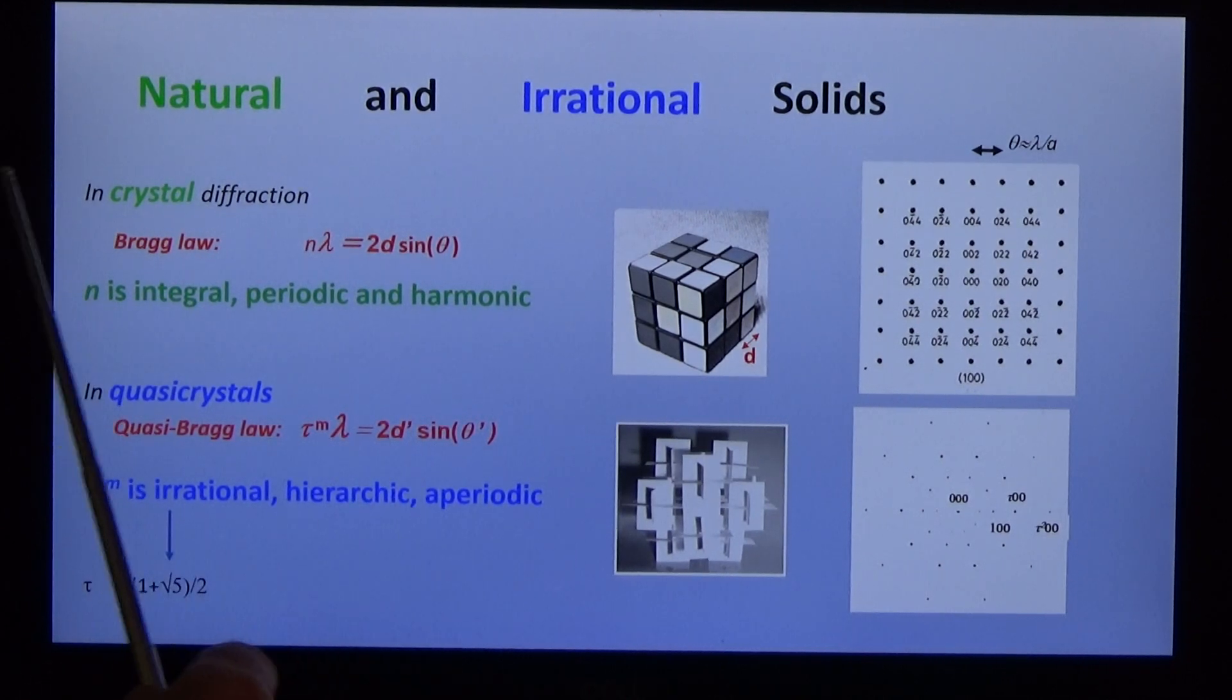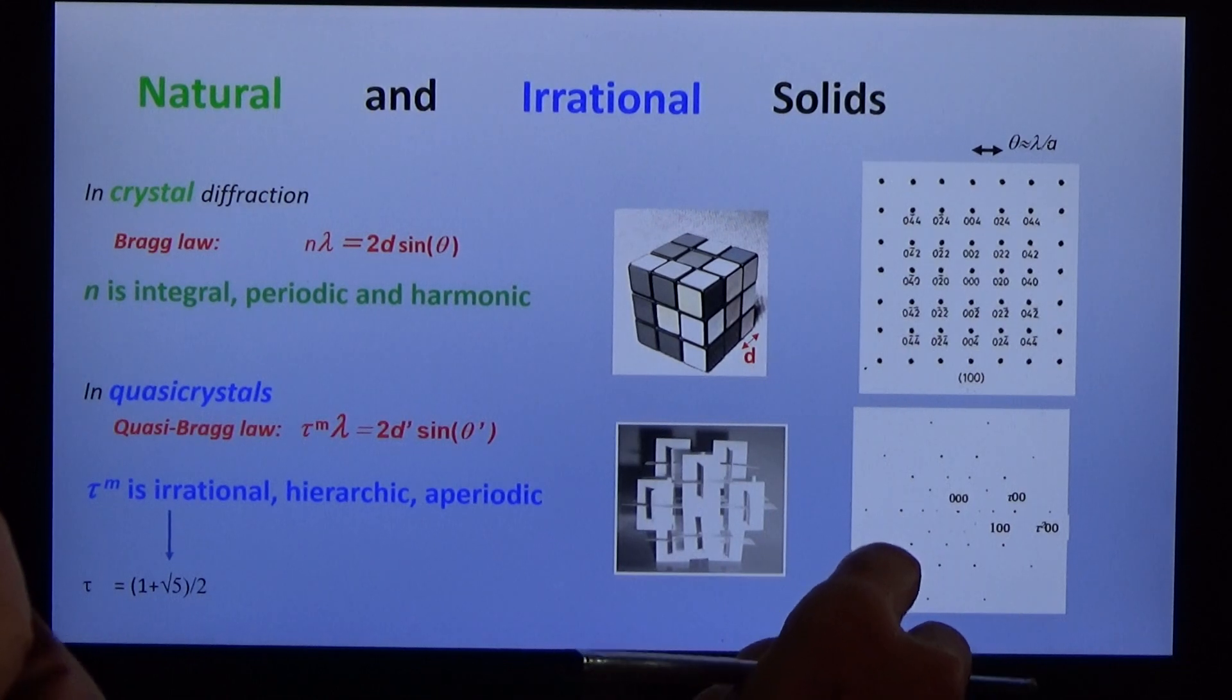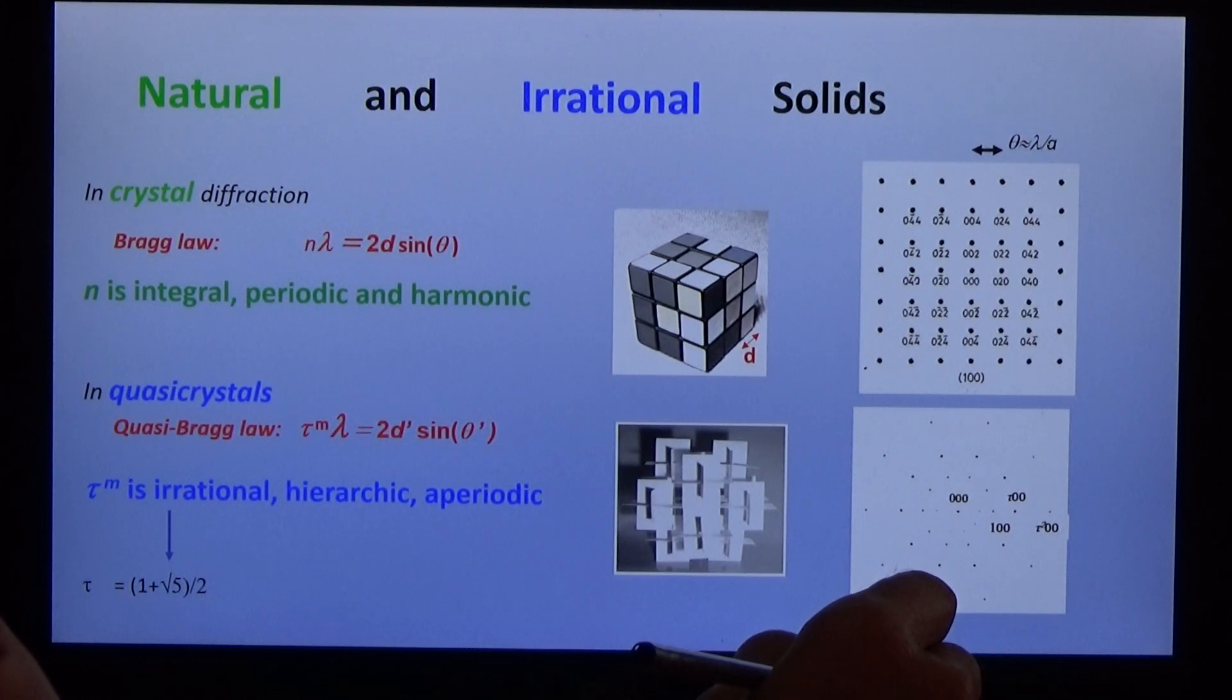Quasi-crystals are completely different. Here's n, 0, 1, tau, tau squared, tau cubed, tau to the fourth. Tau is irrational. It's aperiodic, it's geometric and hierarchic. It follows the quasi-Bragg law. Well, how do we understand it? We can't calculate by Bragg's law the quasi-crystal because Bragg's law doesn't apply.